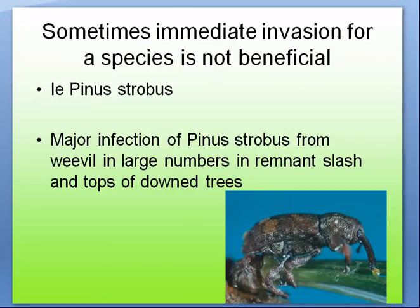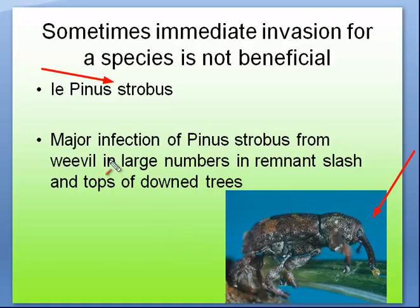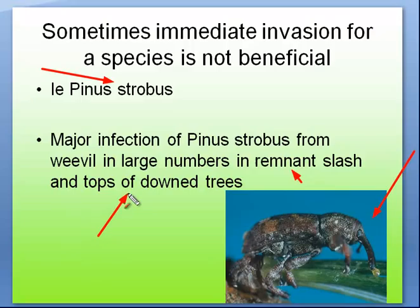Sometimes immediate invasion is not an ideal thing. For example, with Pinus strobus — white pine — we have the white pine weevil. If an entire area is planted or seeded in with white pine, you can have a lot of weevil invasion with many trees killed. These weevils persist in remnant slash and tops of downed trees, then resurface under ideal conditions to bore into the apical meristem, the leaders, and kill off the trees.